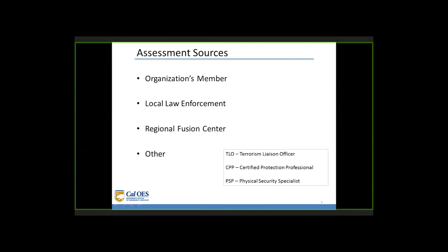First, look to members of your own organization to assist in the vulnerability assessment. However, if necessary to go outside your organization, the first step is to look at your local law enforcement agencies. Departments may employ officers or other personnel who work as community services liaisons or crime prevention specialists. These individuals, if available, are key to a successful assessment, bringing in local knowledge and tying an organization into local policing efforts.